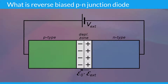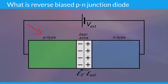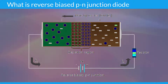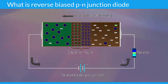When the external voltage is applied to the PN Junction Diode in such a way that the negative terminal is connected to the P type semiconductor and the positive terminal is connected to the N type semiconductor, holes from the P side are attracted towards the negative terminal whereas free electrons from the N side are attracted towards the positive terminal. So, in Reverse Biased PN Junction Diode, the free electrons begin their journey at the negative terminal whereas holes begin their journey at the positive terminal.